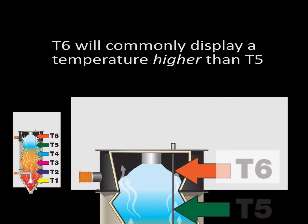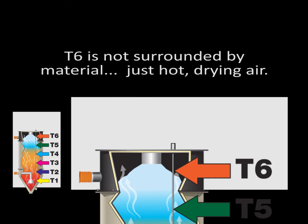Note that T6, located in the airspace at the top of the hopper, will commonly display a temperature higher than T5, which is located in the material. This is because a sensor in the open air is not in contact with heat consuming resin. This is especially true at higher drying temperatures, like 270 degrees F and higher.